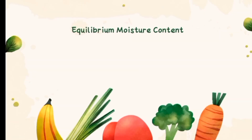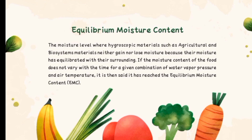What is equilibrium moisture content? Equilibrium moisture content is the moisture level where hygroscopic materials, such as agricultural and biosystems materials, neither gain nor lose moisture because their moisture has equilibrated with their surroundings.